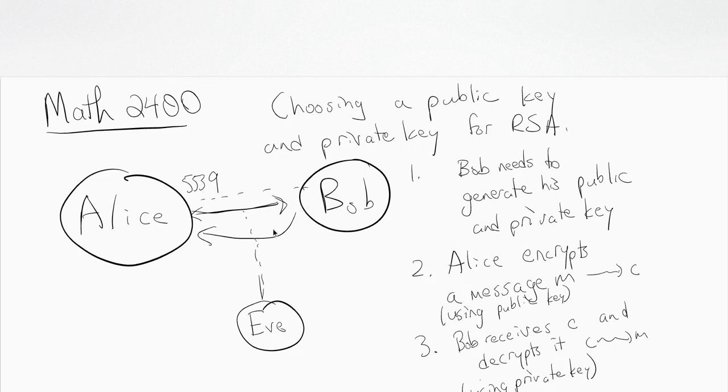The problem is that Eve can freely see any message that they send to each other. Eve is an eavesdropper and maybe Alice and Bob don't mind, or maybe they do mind, but basically there's nothing they can do about Eve. The problem is how can they send each other secret messages without Eve being able to decode the messages.